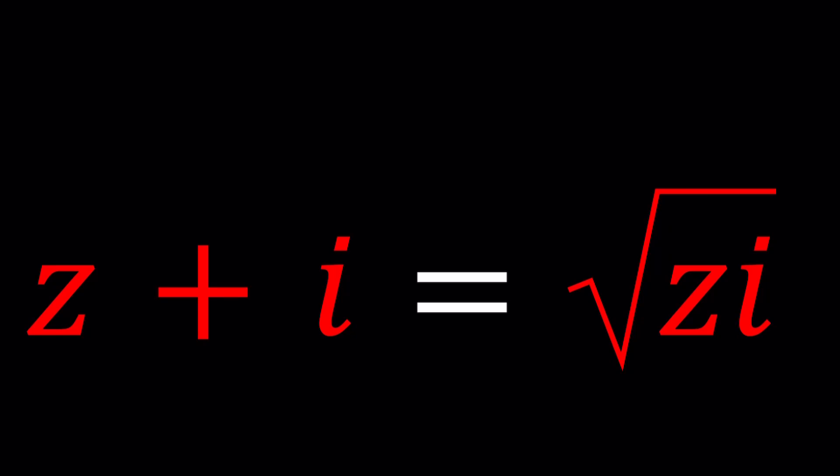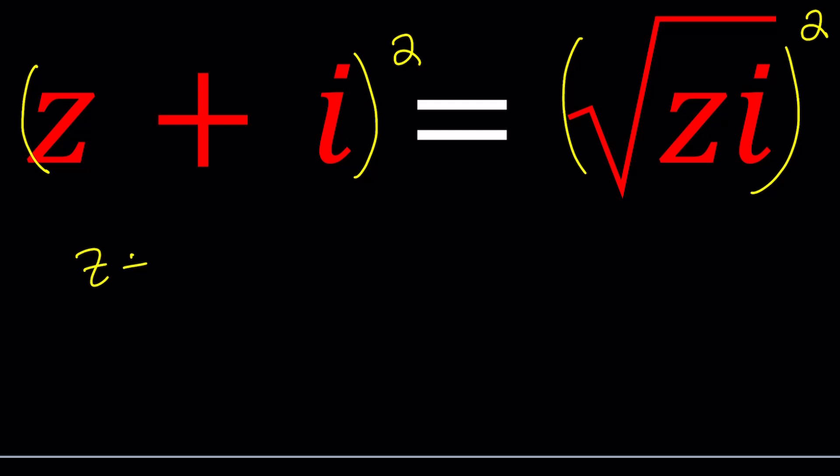We could talk about two different methods here but let's start with squaring both sides. When we square both sides we get rid of the radical giving us z plus i squared equals zi. When you expand the left hand side you get z squared plus 2iz and then plus i squared equals zi.